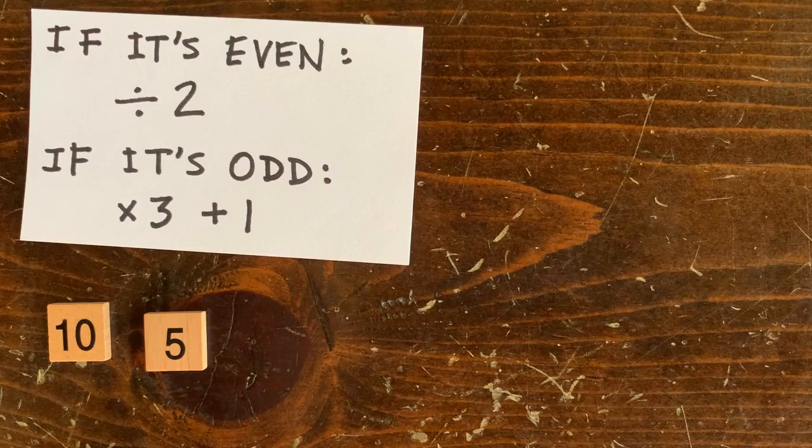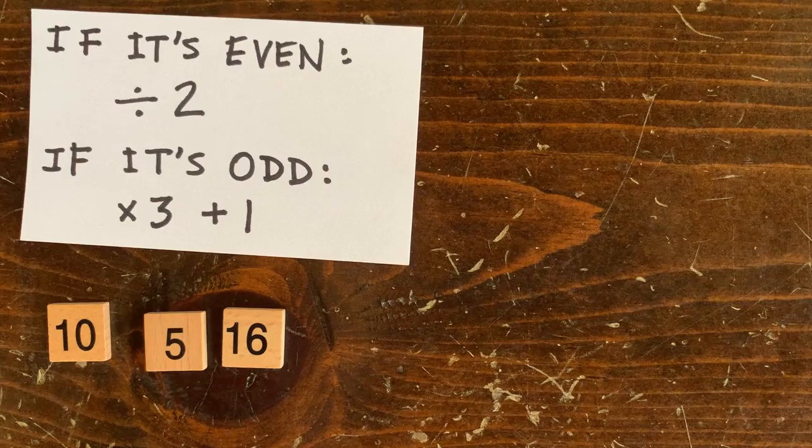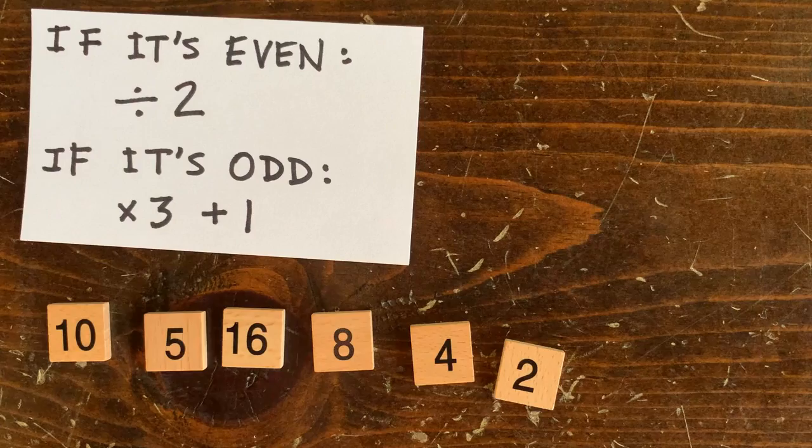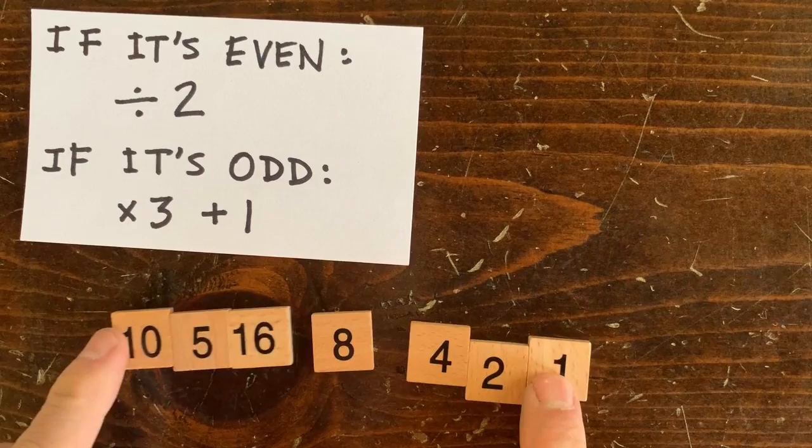10's even, so we cut it in half and get 5. 5's odd, so we multiply by 3 and add 1, which gives us 16. 16's even, so we cut it in half to 8, which we cut in half to 4, then 2, then 1. We'll make it a rule to stop at 1.